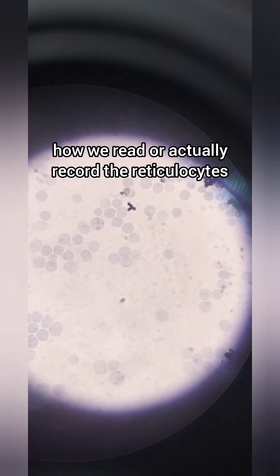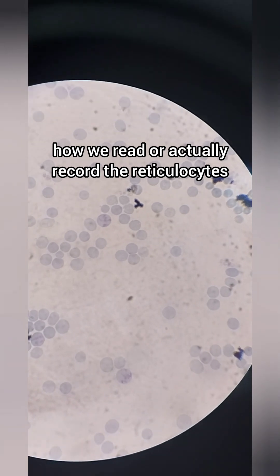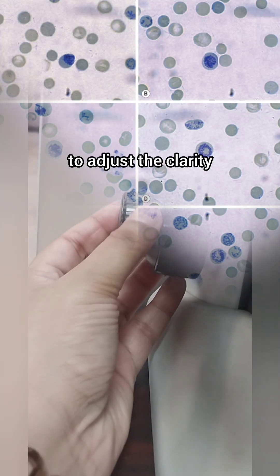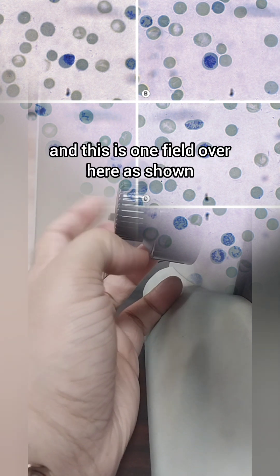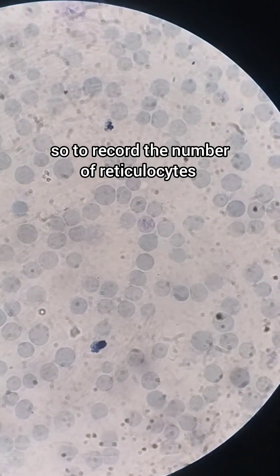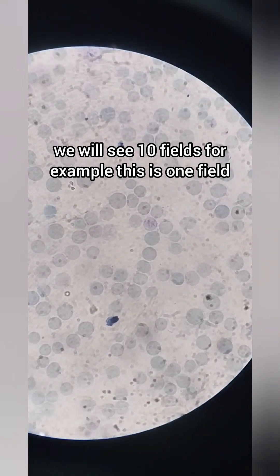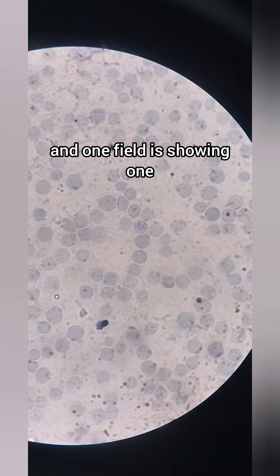Now I'm going to show you how we read or actually record the reticulocytes. You might need to adjust the fine focus to adjust the clarity. This is one field over here as shown. To record the number of reticulocytes, we will see 10 fields. For example, this is one field.